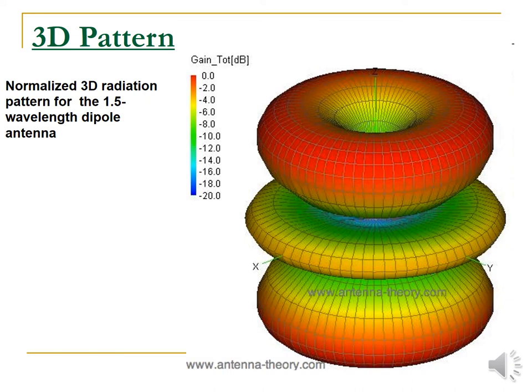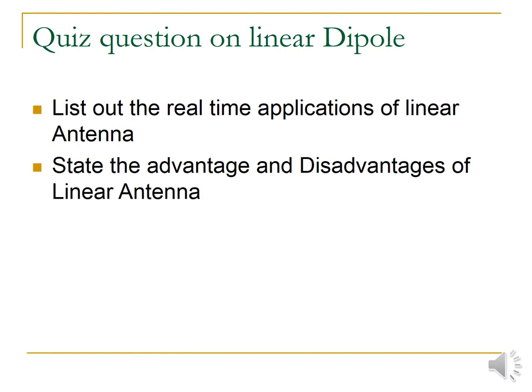You can see exactly how the antenna radiates with a 1.5 wavelength dipole antenna. I hope you all understood. Here is a quiz question based on the linear dipole: list out the real-time applications of a linear antenna and state the advantages and disadvantages of a linear antenna. I hope you all had a very useful session. Thank you.